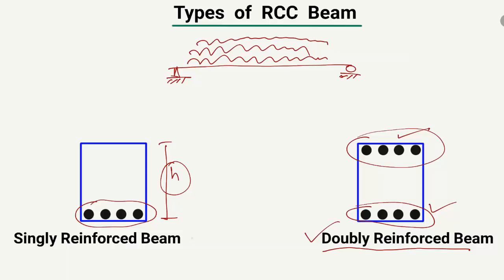This is a simple and basic differentiation between the two types of RC beams. In the singly reinforced beam, reinforcement is provided only in the tension zone. In the doubly reinforced beam, reinforcement is provided in both the tension and compression zones to increase the capacity of the beam. Hope you understood — don't forget to subscribe. Thank you for watching.